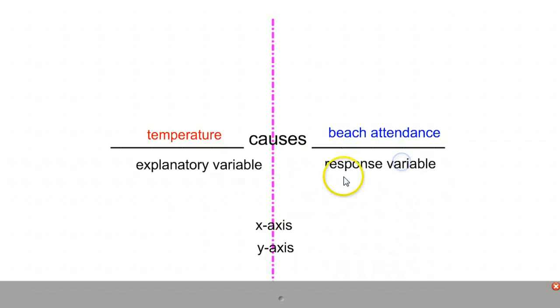Making beach attendance the response. Since the explanatory variable always goes on the x-axis, we'll label it as such here. And then the response variable, beach attendance, always goes on the y-axis.